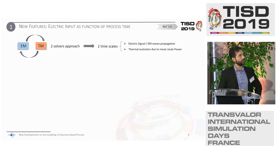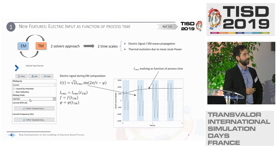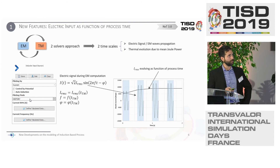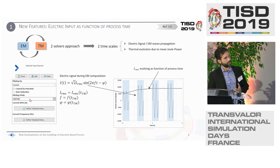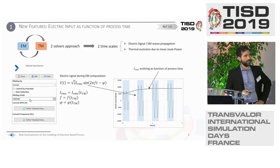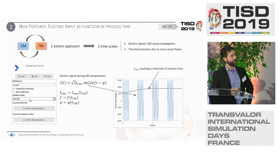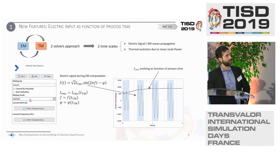Another request from users of the 2.1 version was the possibility to pilot the electric input as a function of the process time. From the simulation point of view, we are dealing with two timescales: for the electromagnetic aspect we need to deal with the electric signal described by a sinus function, and from the process time, which is usually longer. To achieve this, we introduced the possibility of piloting the amplitude or the root mean square value of the electric signal, as well as the frequency and even the phase of the signal, as a function of the process time coming from the thermomechanical solver.